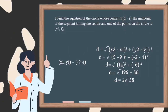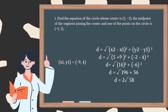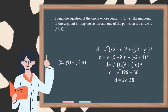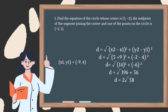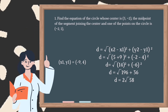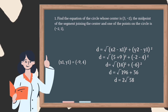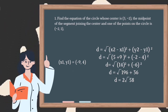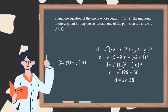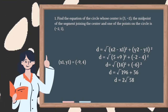After that, we need to use the distance formula: distance equals the square root of (x₂ - x₁)² + (y₂ - y₁)². Now let us input our given values. Distance equals the square root of (5 + 9)² + (-2 - 4)², then distance equals the square root of 14² + (-6)², which gives us the square root of 196 + 36. So our final answer is 2√58.